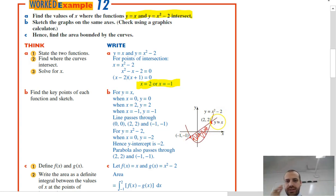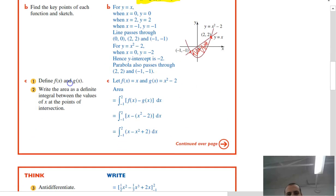So, we're going to do the integral between 2 and negative 1 of the higher function, subtracting the lower function. So, the higher function was y equals x, and we're subtracting the lower function, x squared minus 2.